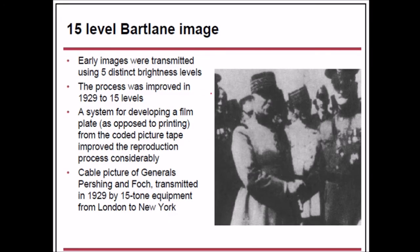Early images were transmitted using five distinct brightness levels. The process was improved in 1929 to 15 levels. A system for developing a film plate, as opposed to printing from a coded picture tape, improved the reproduction process. Cable pictures of General Pershing were first transmitted in 1929 by 15-tone equipment from London to New York.